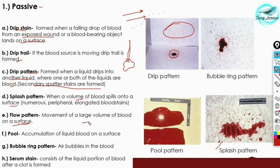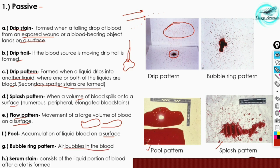The fifth subtype is the flow pattern — movement of a large volume of blood on a surface. A large volume of blood on the surface begins flowing as water would, creating a flow pattern. A pool is an accumulation of liquid blood on a surface — you can see a clear image depicting the pool pattern. Next is the bubble ring pattern, where air bubbles are present in the blood stain.